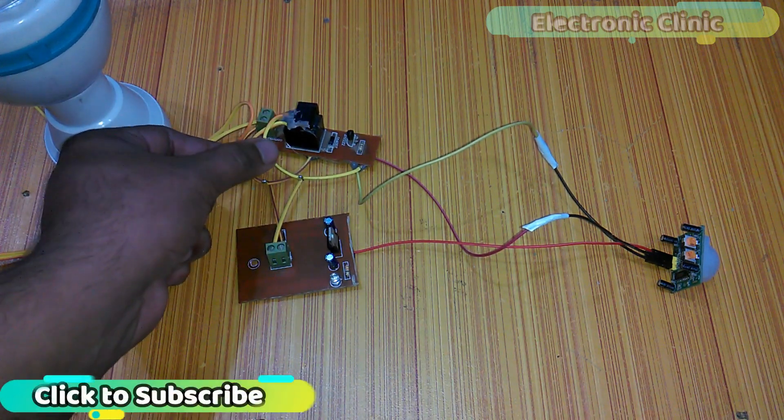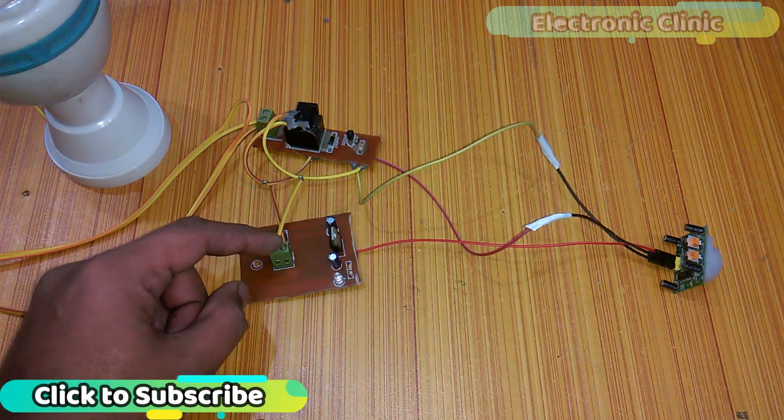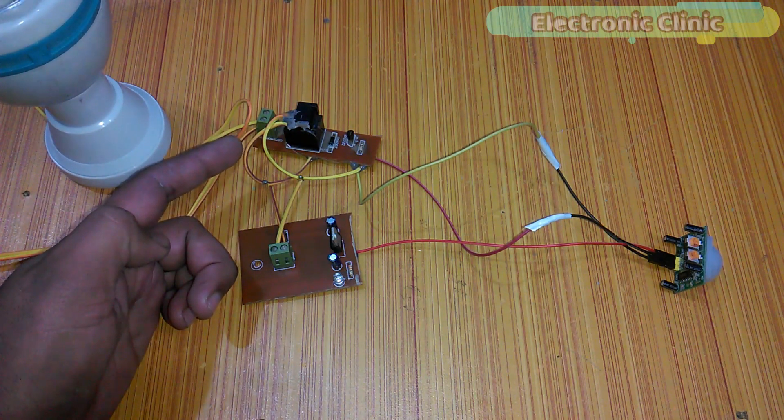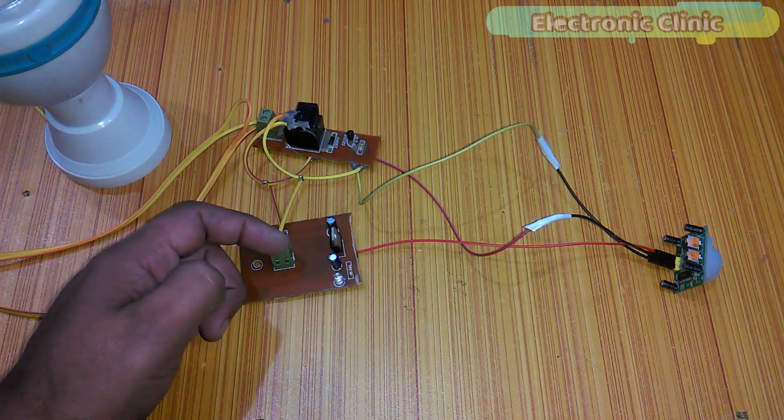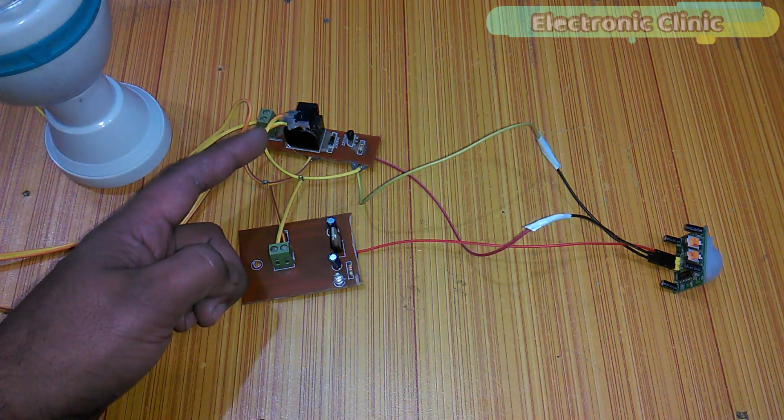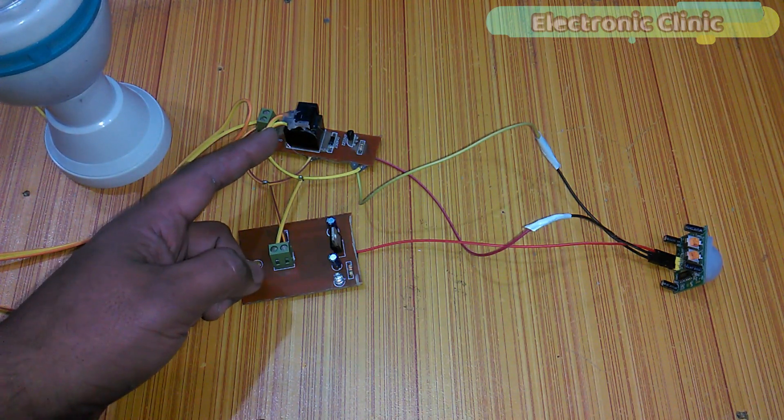And as you can see these two wires are also connected over here. So I am giving 12 volts to the relay module and also to the 7805 voltage regulator. So I will be using a single 12 volt adapter.